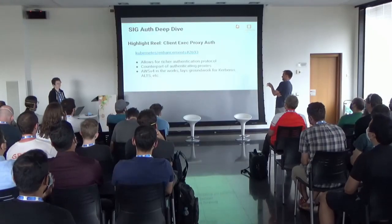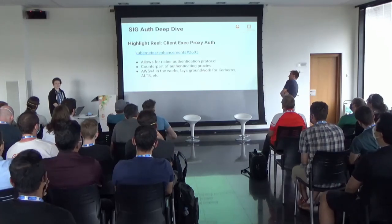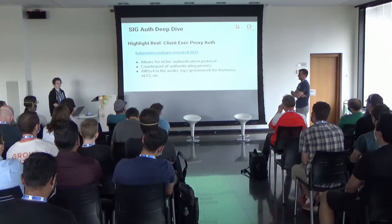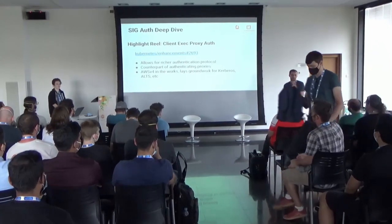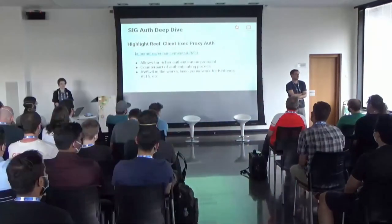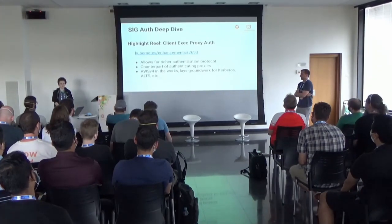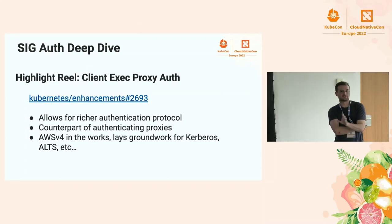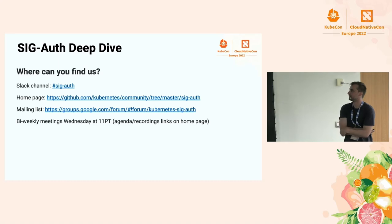As a final highlight: while the exec auth plugin is now GA, there are future plans. The Client Exec Proxy Auth proposal currently under review allows richer support for authentication protocols such as request signing — for example AWS SigV4 or Kerberos — and can be thought of as the counterpart to authenticating proxies, which is another model for extending Kubernetes authentication.